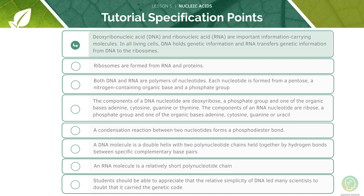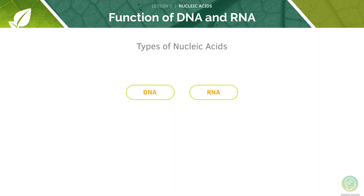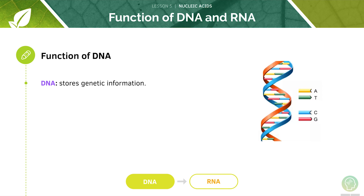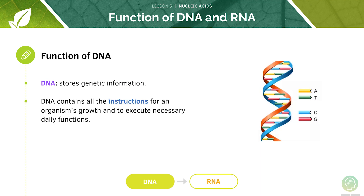We'll start by looking at DNA and RNA in more detail. DNA and RNA are both types of nucleic acids. DNA is responsible for storing genetic information — that means all the instructions necessary for an organism to grow and to carry out functions from day to day.